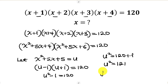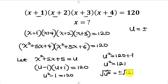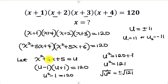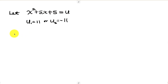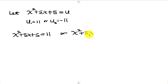Taking the square root of both sides, we get u equal to plus or minus the square root of 121. The square root of 121 is 11, so u equals positive 11 or u equals negative 11. Now we're going to plug this back into our substitution: x squared plus 5x plus 5 equals u.